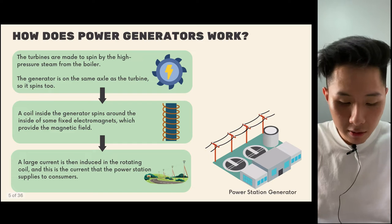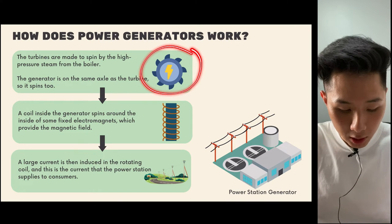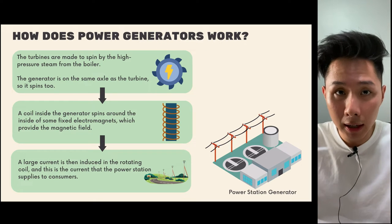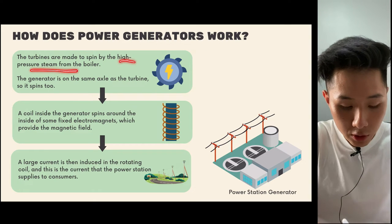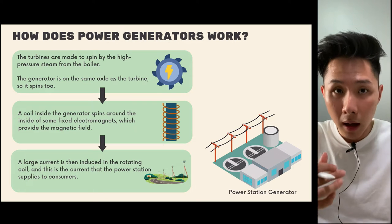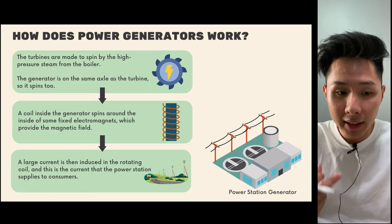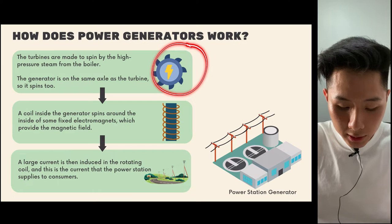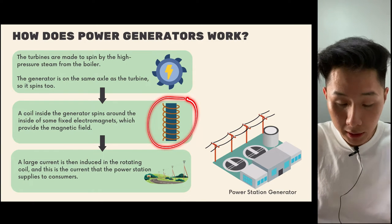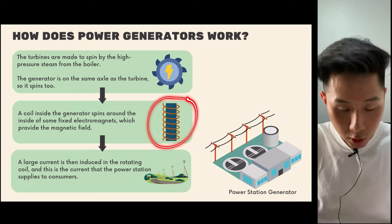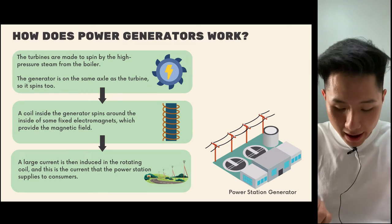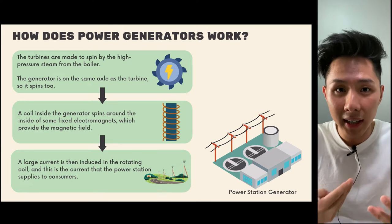These generators usually have something called a turbine. These turbines are made to move and rotate by high-pressure steam from a boiler. In a power station generator, they boil water and the steam helps turn the generator. Inside the generator they place a magnet, which provides a magnetic field. When movement and magnetic field combine together, they create electricity.